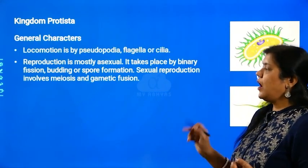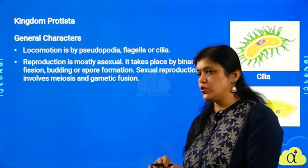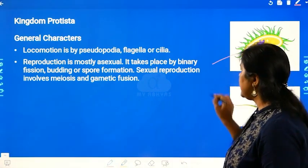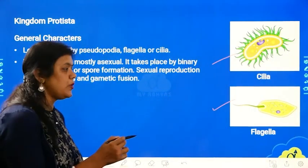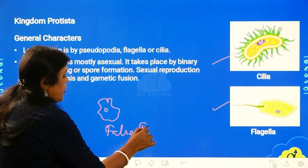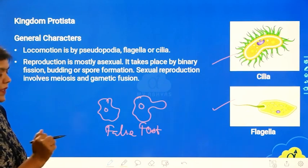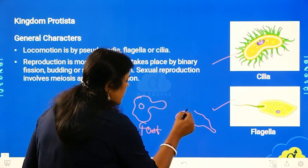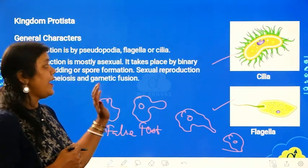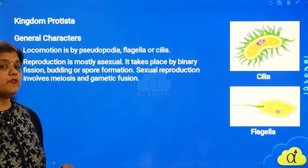Locomotion in protistas is by pseudopodia, flagella, or cilia. They move around by either having pseudopodia - which means false foot, as seen in amoeba - or they may have flagella or cilia. In amoeba-type organisms, pseudopodia develop as a part of the body that helps in locomotion, pulling the organism toward a particular area. Some organisms show cilia and some show flagella for movement.